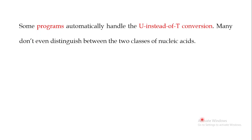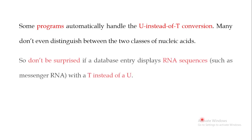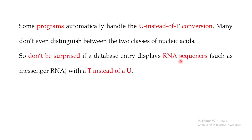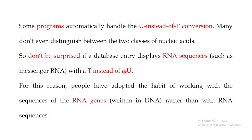Some programs automatically handle the U-instead-of-T conversion — if you provide an RNA sequence containing T, they will convert T into U. Many tools don't even distinguish between the two classes of nucleic acids. So don't be surprised if a database entry displays an RNA sequence, such as a messenger RNA sequence, with T instead of U. You will know that if it is an RNA sequence and you find a T, you should read that as U. For this reason, most people have adopted the habit of working with RNA gene sequences written in DNA format in these tools, rather than with RNA sequences directly.